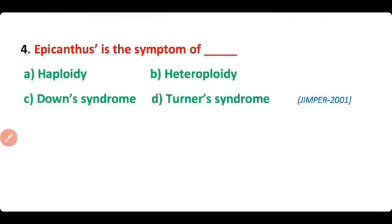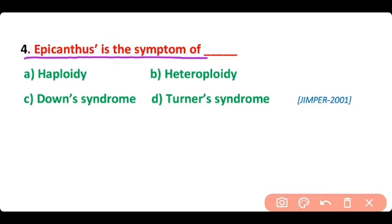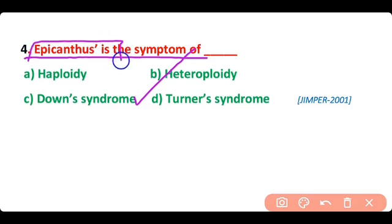Question number 4. Epicanthus is the symptom of — so correct answer is option C. Epicanthus is the formation of skin folding around the eyelid and it is a symptom of Down syndrome.